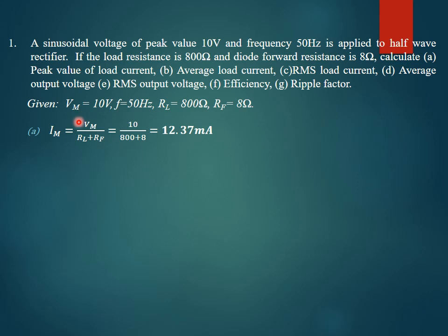Given the forward resistance of the diode RF, the peak value of load current Im equals the peak voltage Vm divided by the sum of load resistance and forward resistance of the diode: Im = Vm / (RL + RF). Substituting the given values gives us a peak value of current of 12.37 mA.